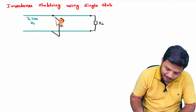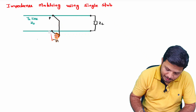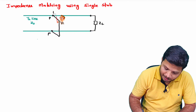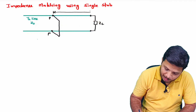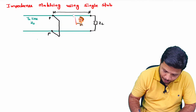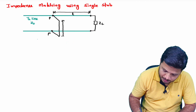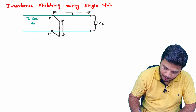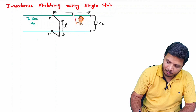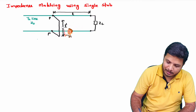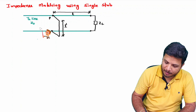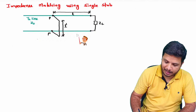The question is: if the stub is located at PP' and this location from the load is separated by L, and if the length of this stub is L', then what should be L and L' so that we can have proper impedance matching with this transmission line?